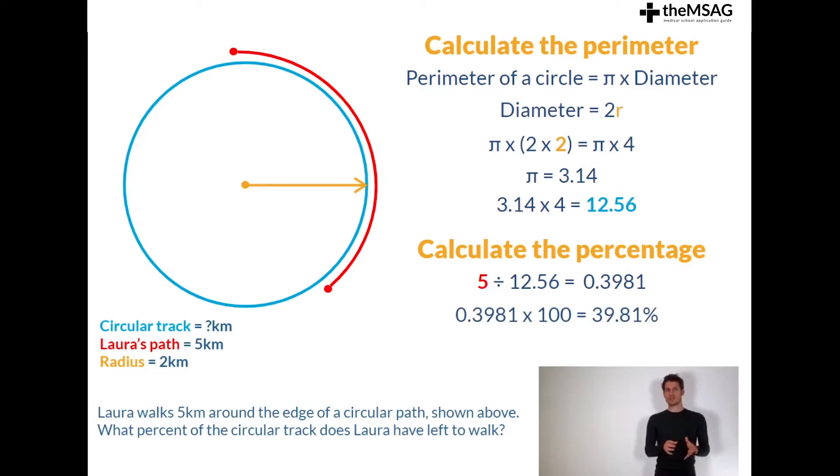Be careful though, because the question was asking for the percent left to walk. 100% minus 39.81% equals 60.19%, which is the correct answer. Let's try these questions now.